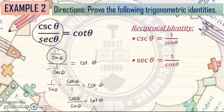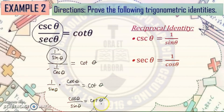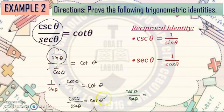We already discussed in the things to consider that our final answer should be in cosine and sine functions only. So we will transform cotangent theta to its sine and cosine form. That gives us cosine theta over sine theta, equal to cotangent theta expressed as cosine theta over sine theta. Both sides are now equal, and we have proven example number 2.